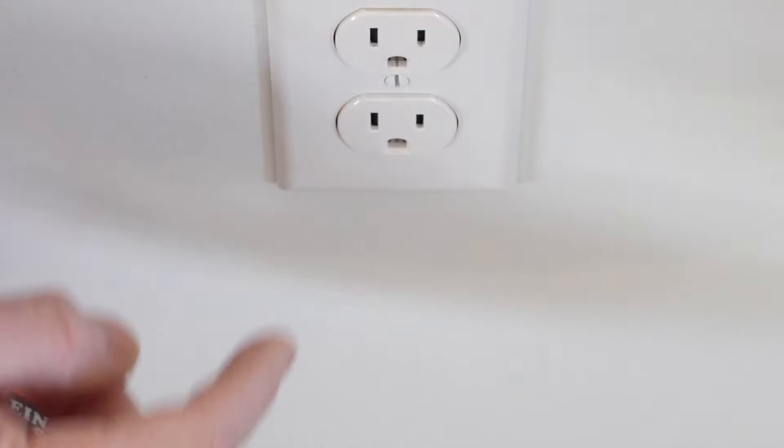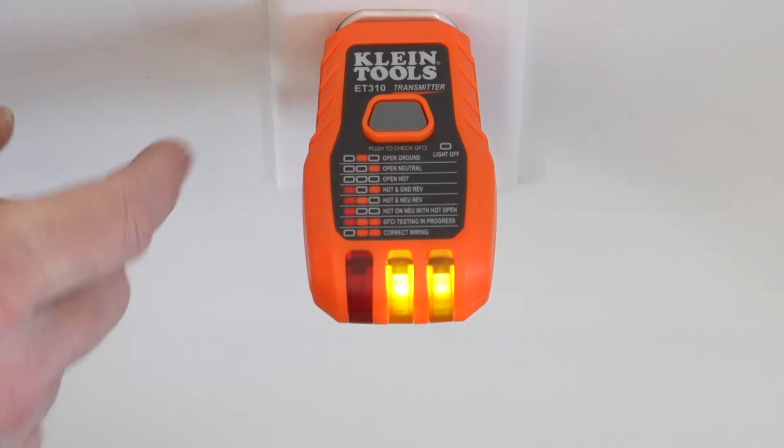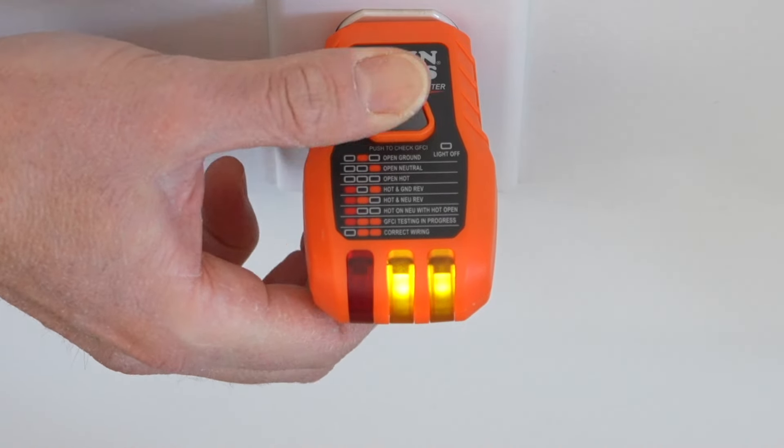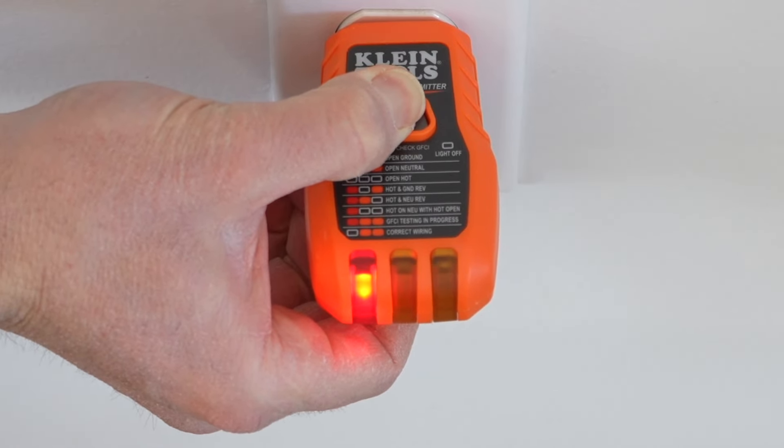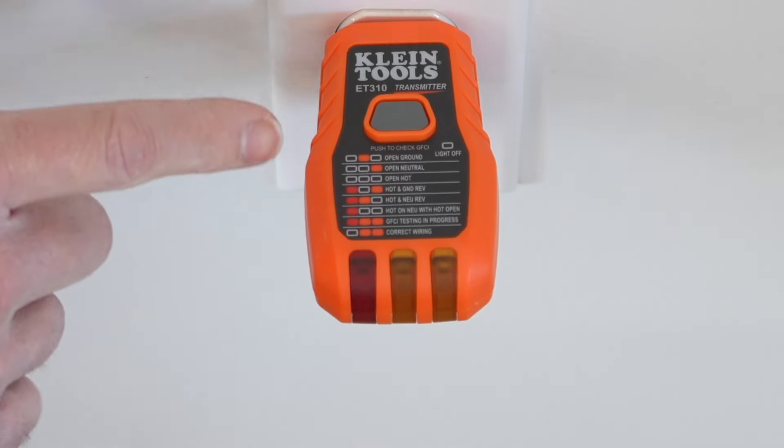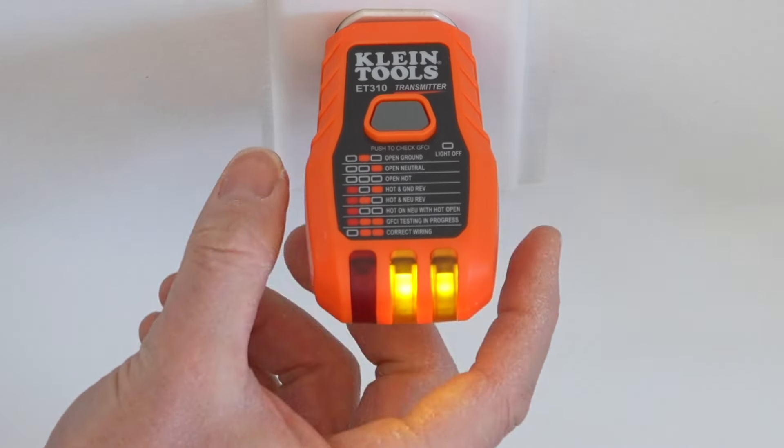Now this receptacle is not on a GFI and if we plug this in, it gives us our same code as saying correctly wired. But if we press this in, it will not trip the breaker. So that's something to keep in mind. If you go to test this on a circuit and it's not tripping the breaker, it's more than likely not a GFI protected circuit.